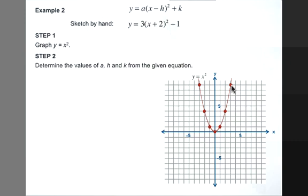We're going to determine the values of a, h, and k from the given equation. Luckily for us, our quadratic expression is already in vertex form. So, our a is 3, our h is negative 2, and our k is negative 1.